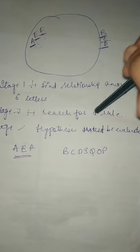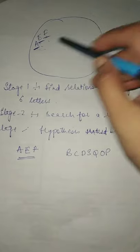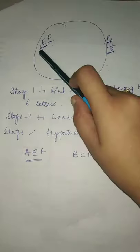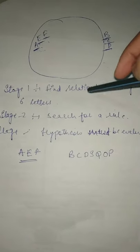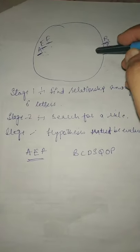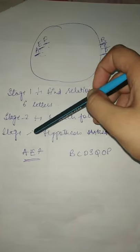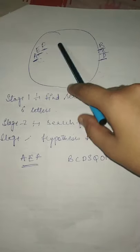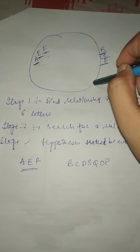Second stage में क्या करते हैं? हम search for rule — कौन सा rule apply किया गया है? यानी A यहाँ है तो B, C इधर है, D यहाँ है, तो E यहाँ है — तो कौन सा rule apply किया गया है? Then जो भी rule apply हुआ उसके basis पर hypothesis develop कर लेते हैं. Final stage में hypothesis को evaluate करते हैं — कि हमारे solution के लिए perfect है या imperfect है?